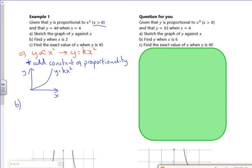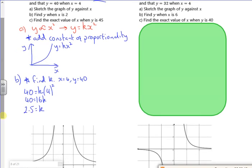Part B says find y when x is 2. First I want to find k. I know that x is 4 and y is 40. So 40 is k lots of 4 squared. So I have 40 is 16k. So that's going to be 5 over 2, 2.5. So my equation is y equals 2.5x squared.